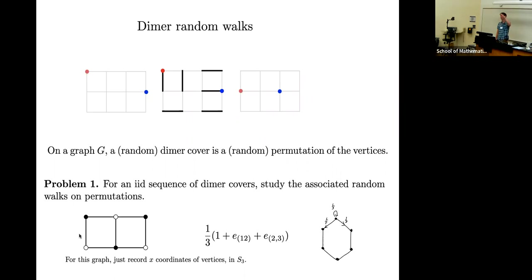Rather than having a random walk on S6, which is kind of a big group, if I just consider the projection, I get essentially the same random walk, and it just looks like it's a random walk on S3 now. You can see that with probability one-third, your x-coordinate does not change. This graph has three dimer covers. One of them uses all three vertical edges, and then the other two are like this or like that. So with probability one-third, the permutation does not change.